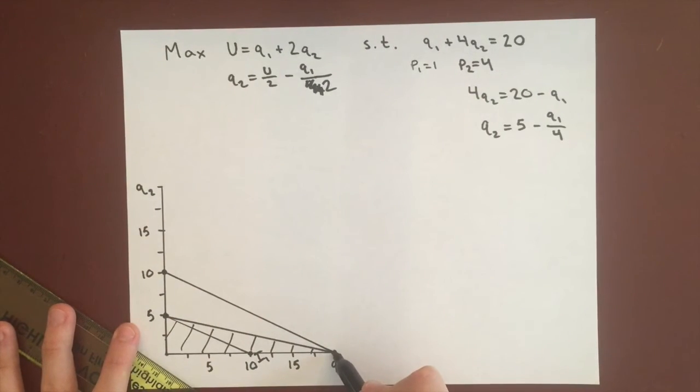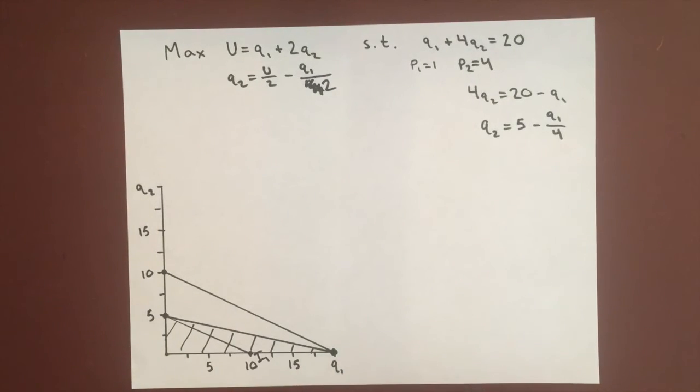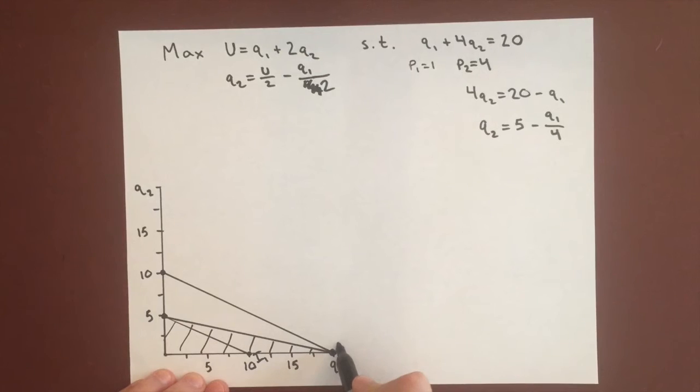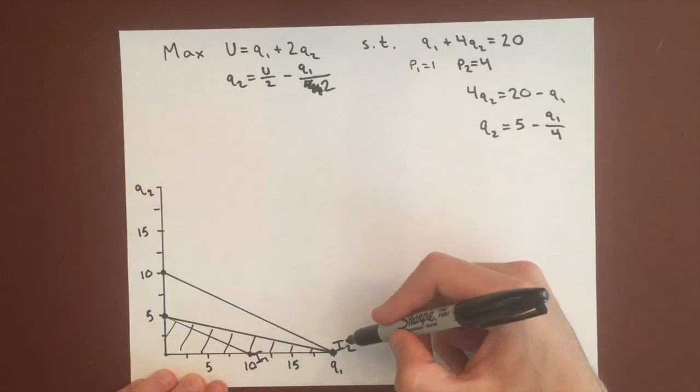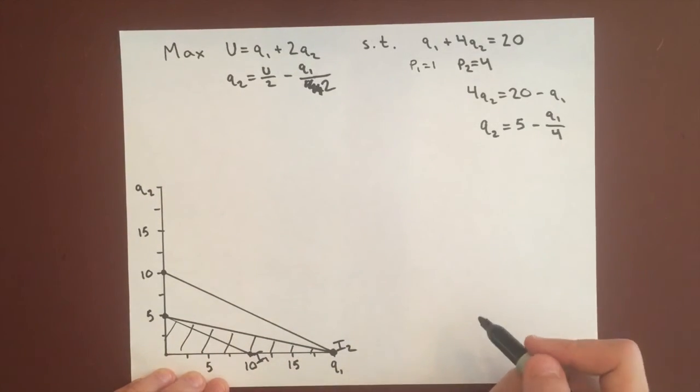We can see this touches the budget curve but just at this last tip where we're buying all of Q1, and it's much farther from the origin than i1 is. So this curve i2 is going to maximize the utility function.